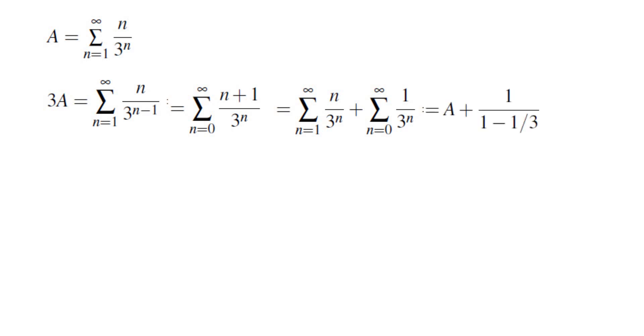The first one is the same as what we had so that would be A. The second one is a geometric sum which is 1 over 1 minus 1 third, so that is A plus 3 halves.